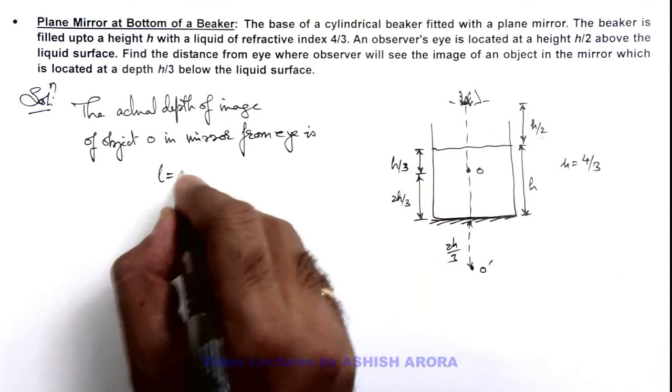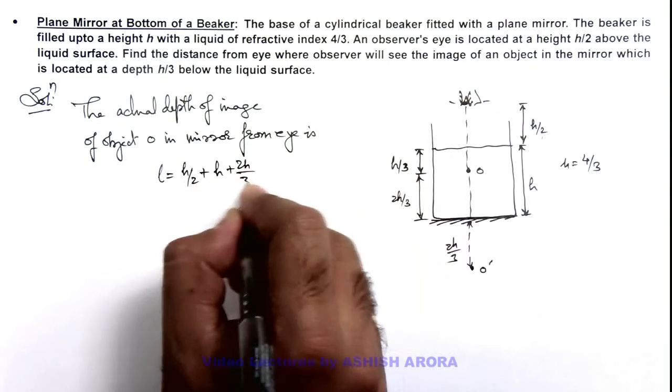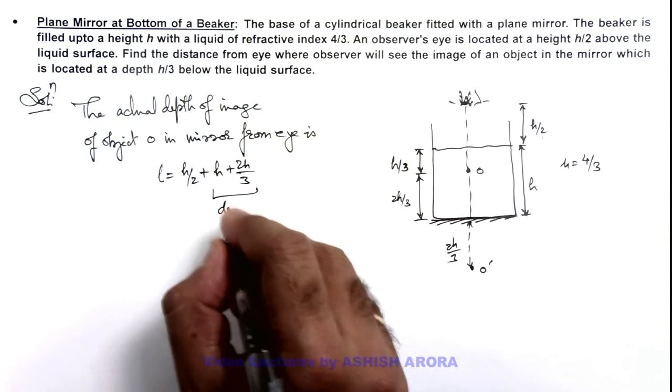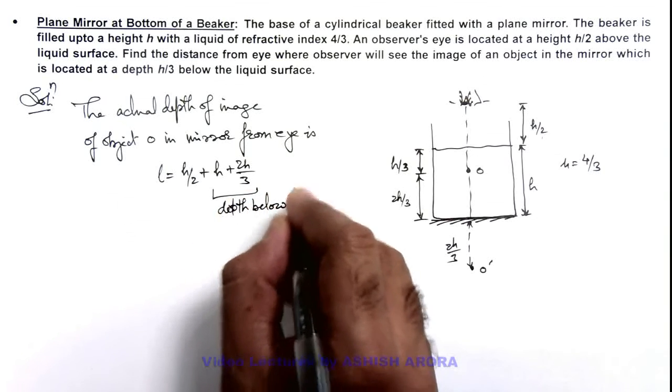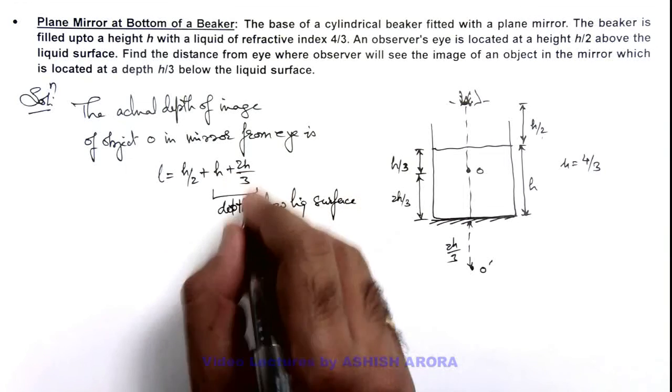This distance l we can write as h/2 plus h plus 2h/3, where h plus 2h/3 is the depth below liquid surface, and this is equal to 5h/3.